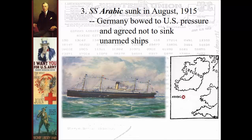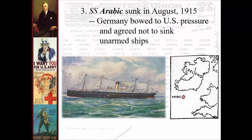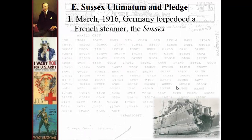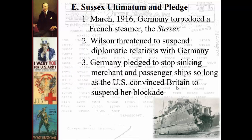Shortly after, another ship, the Arabic, was sunk. Following these dual sinkings, Germany bowed to pressure from the US and agreed not to sink any more unarmed ships — this was called the Sussex Ultimatum and Pledge. Then in March 1916, Germany torpedoed a French ship, the Sussex. Wilson threatened Germany with diplomatic action that might lead to war. Germany promised to stop sinking merchant and passenger ships, but only if the US convinced Britain to suspend its blockade. So Germany called off unrestricted submarine warfare in 1916 — about a year after the Lusitania, and about a year before the US actually declares war.